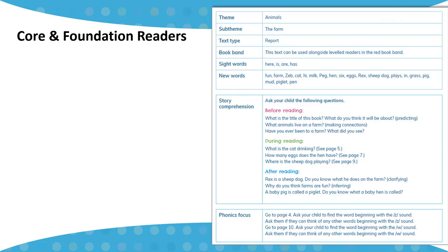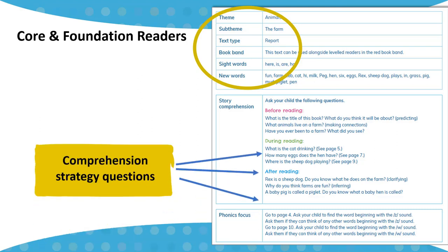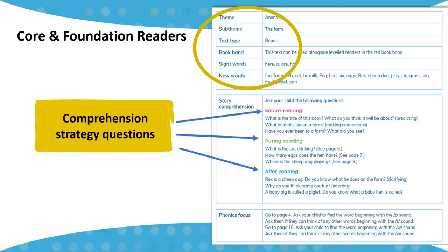Each text in the infant core readers is also preceded by a fantastic information page, which lists the theme, genre and sight words being covered. It also contains comprehension questions that can be asked before, during and after reading. Many of these questions cover comprehension strategies that you will be familiar with from Building Bridges to Understanding.